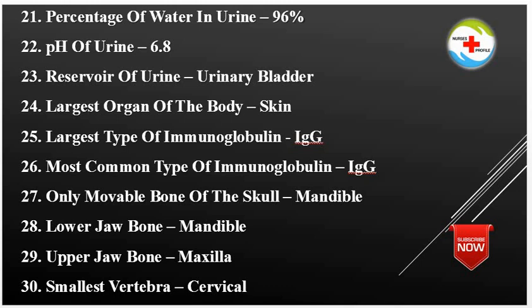Largest Type of Immunoglobulin: IgG. Most Common Type of Immunoglobulin: IgG. Only Moveable Bone of the Skull: Mandible. Lower Jaw Bone: Mandible. Upper Jaw Bone: Maxilla. Smallest Vertebrae: Cervical Vertebrae.